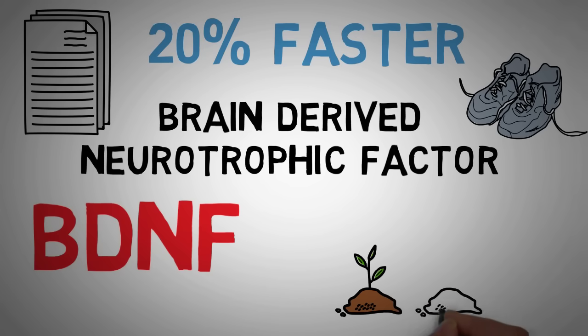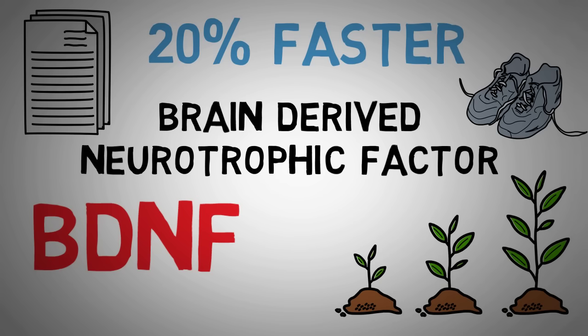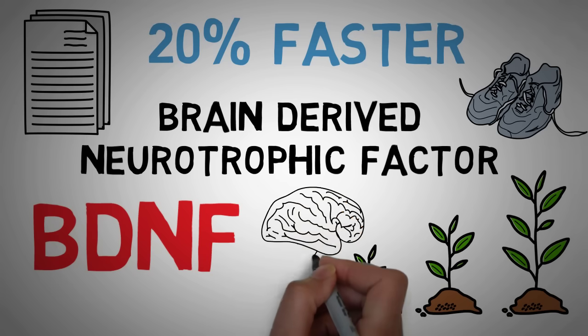BDNF nourishes brain cells and makes them grow. Just like a plant fertilizer supports plant growth, BDNF acts as a brain fertilizer. A 2013 study showed that just 20 to 40 minutes of aerobic exercise increased BDNF in the blood by 32%.